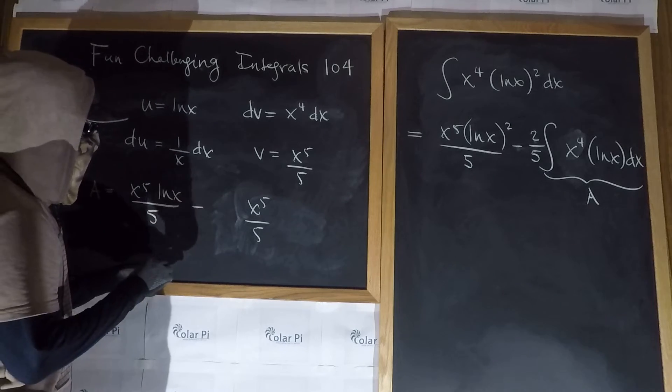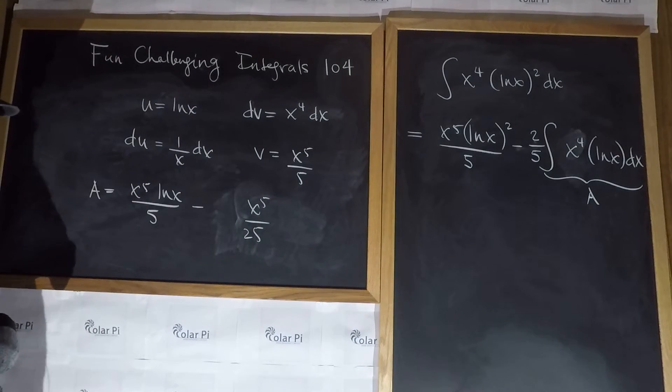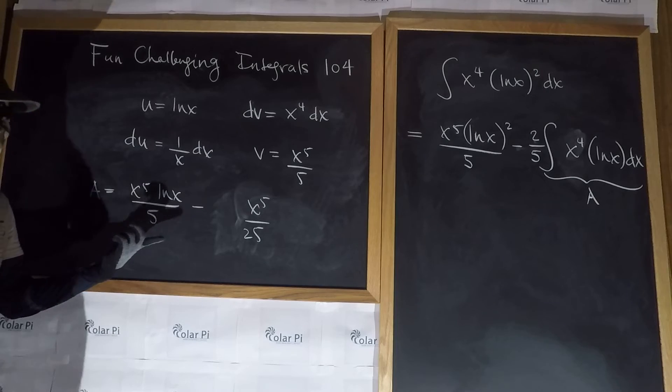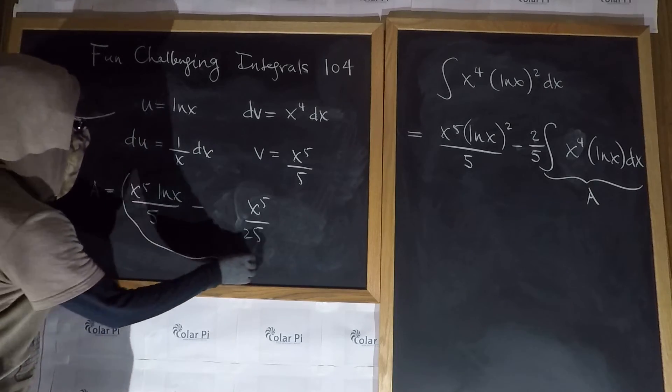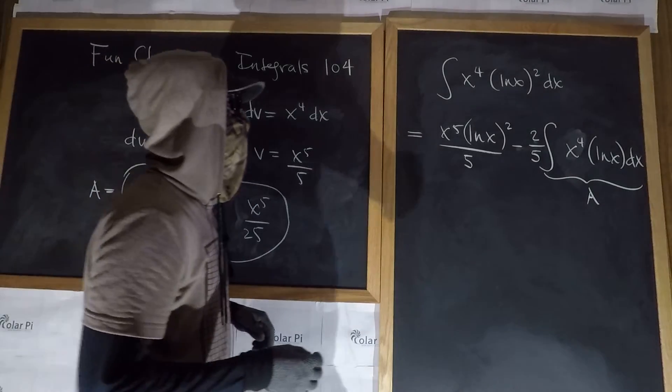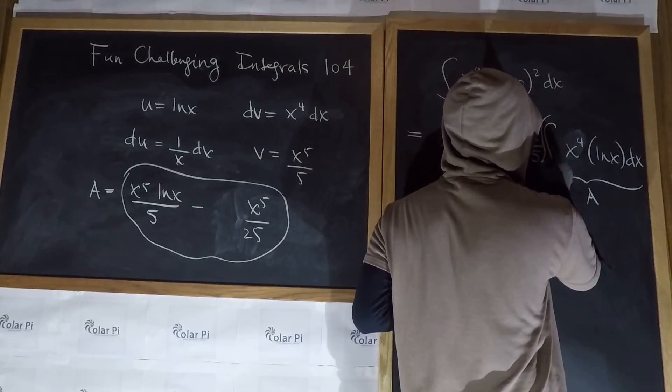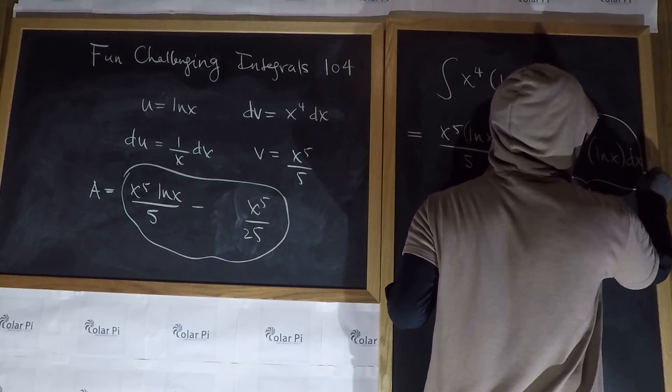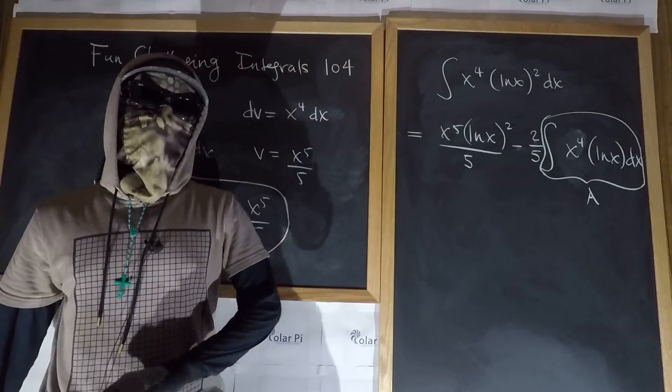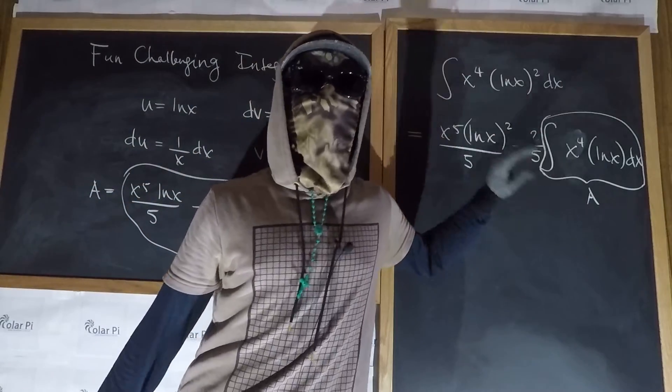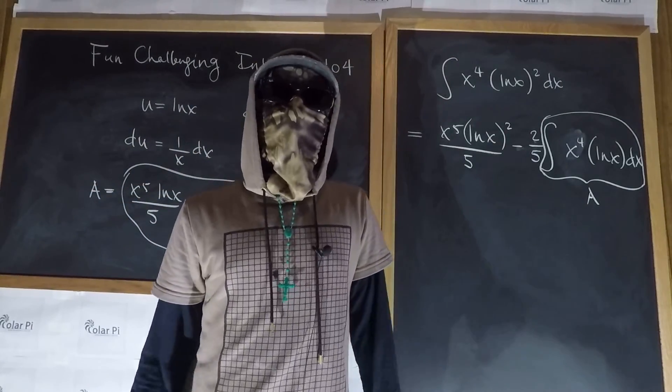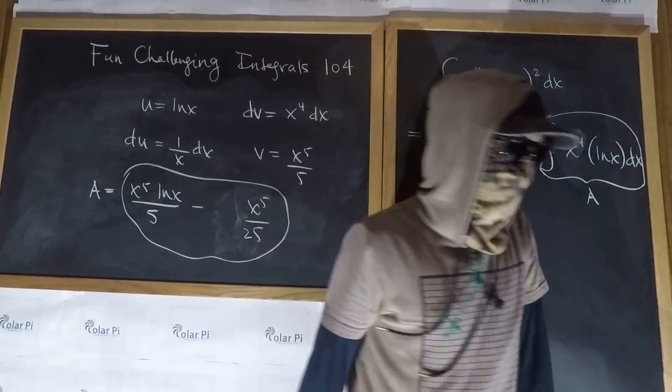But wait, this one fifth multiplying it makes the 25 denominator there. So if we take this here and replace this integral with it, and then put a plus c down there, then we're done.